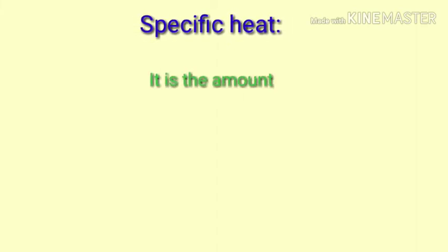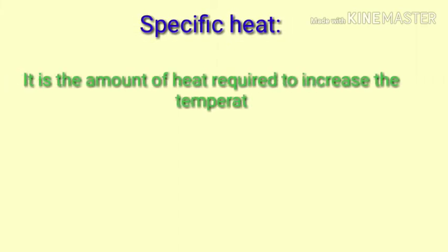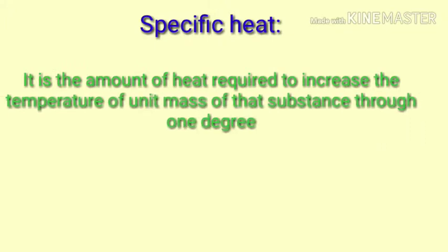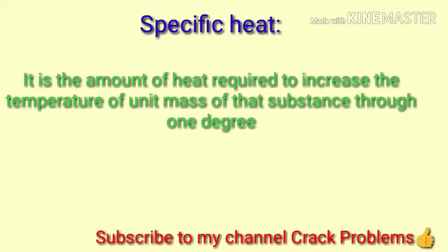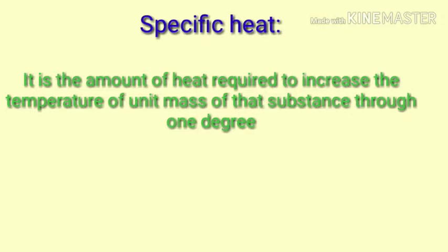Let us define what is specific heat. It is the amount of heat required to increase the temperature of unit mass of that substance through 1 degree. In simple words, if you have a unit mass of a substance, that is either 1 gram or 1 kg, and you want to increase the temperature by 1 degree, the amount of heat that would have to be given is called the specific heat of that substance. Every substance has a different specific heat.